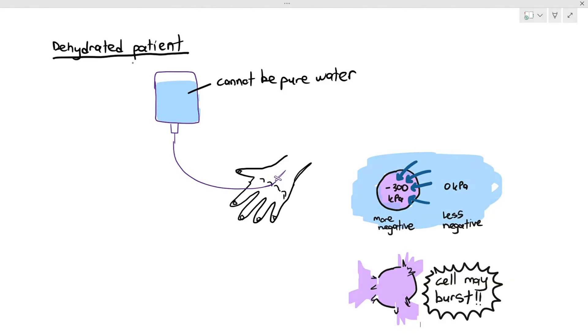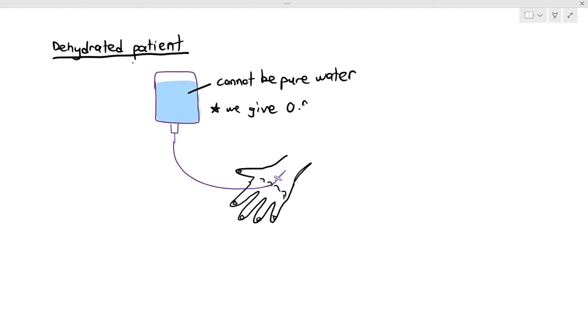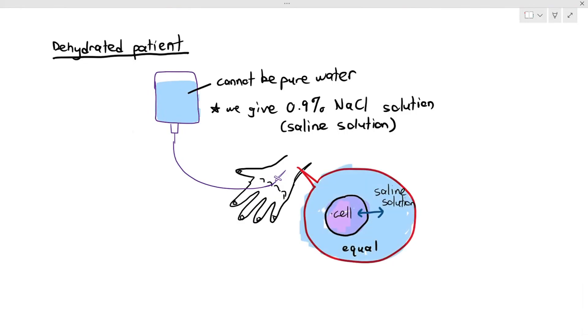What we do in hospitals usually is we give something called 0.9% sodium chloride solution. Don't need to memorize this, but it's just good to know. Also referred to as a normal saline solution. The normal saline solution is interesting because the normal saline solution has a water potential equal to the cell cytoplasm. So even if you were to inject normal saline solution into the patient, osmosis will not damage the cell, either causing it to shrink or causing it to burst. Neither will happen. So you are able to rehydrate the patient without causing any severe damage to the patient's cells. That is why in dehydrated patients, it is important not to just give pure water, but also add about 0.9% sodium chloride inside to prevent osmosis from damaging the cells.